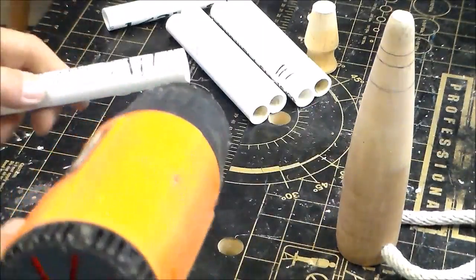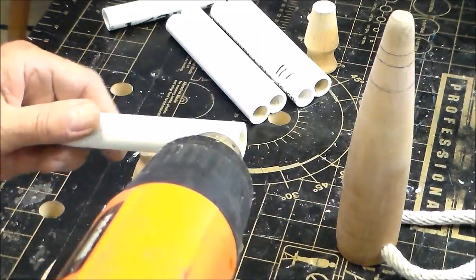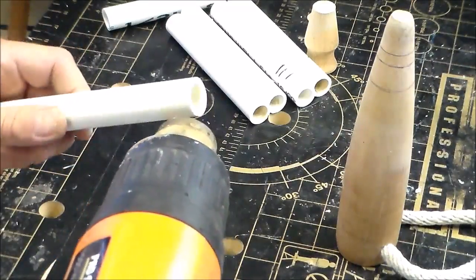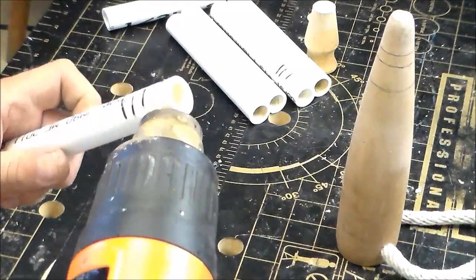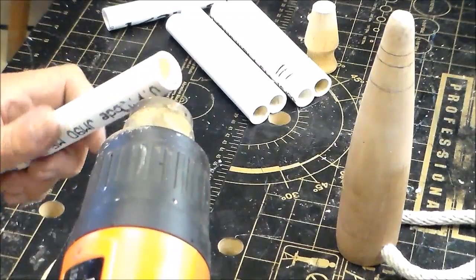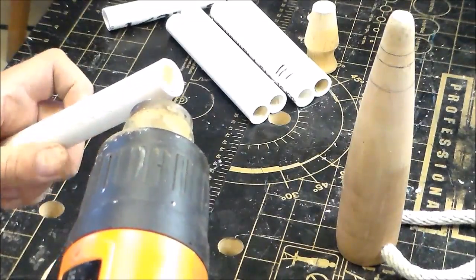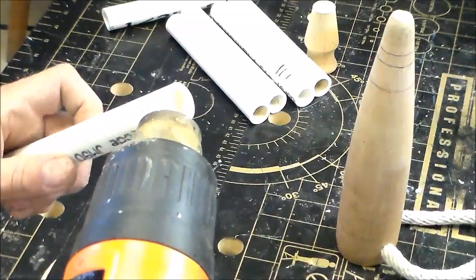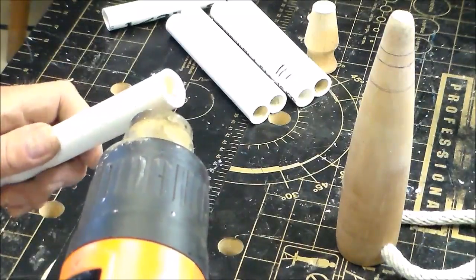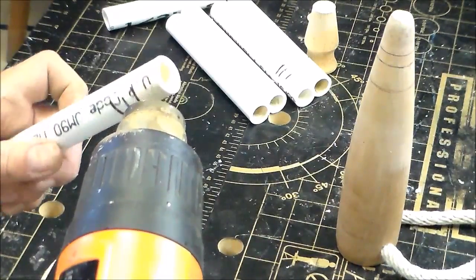The half inch PVC pipe is being heated up with a 1500 watt heat gun. Now you could use a torch, but I don't like having the flame. It burns the PVC too easily and it's hard to control the heat.